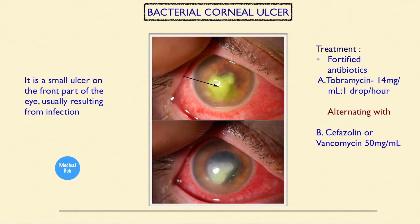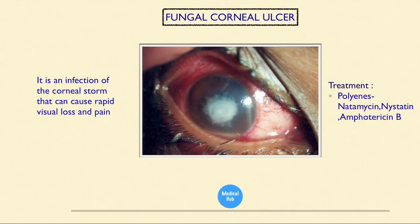This is bacterial corneal ulcer — a small ulcer on the front part of the eye usually resulting from infection. Treatment is fortified antibiotics: streptomycin 40 mg/mL one drop per hour, alternating with cefazolin or vancomycin 50 mg/mL. This is fungal corneal ulcer — an infection of the corneal stroma that can cause rapid visual loss and pain. Treatment: polyenes — natamycin, nystatin, Amphotericin B.